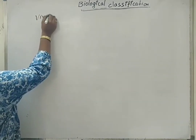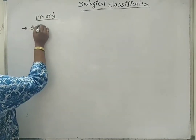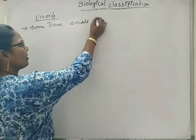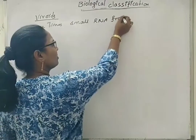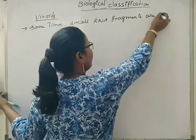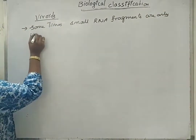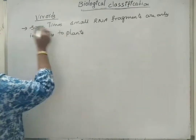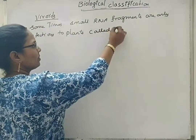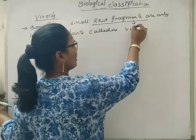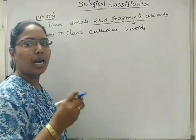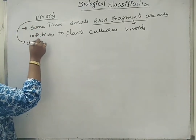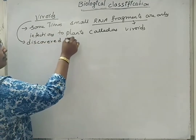Next is viroids. Sometimes small RNA fragments are infectious to plants. This RNA fragment is called a viroid — meaning a small RNA infectious fragment. These were discovered by Diener.